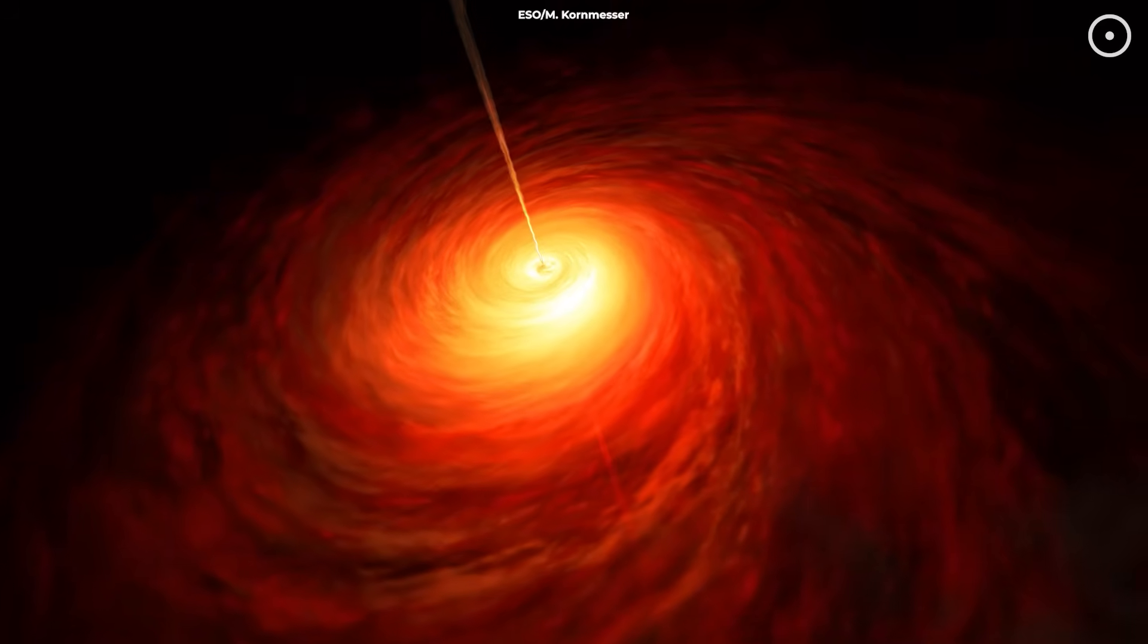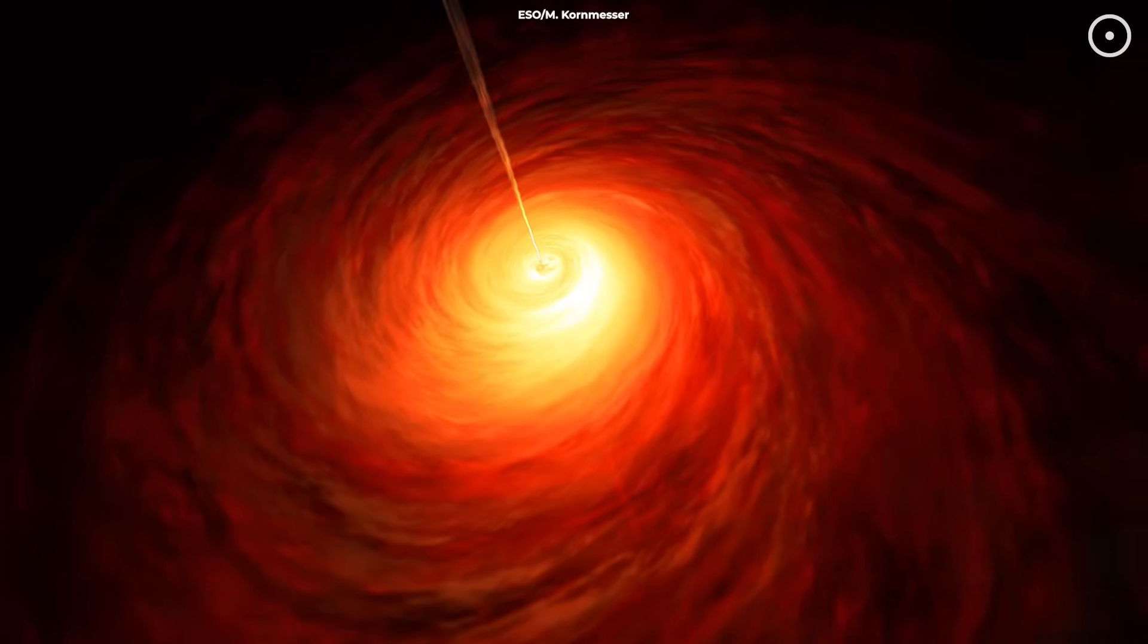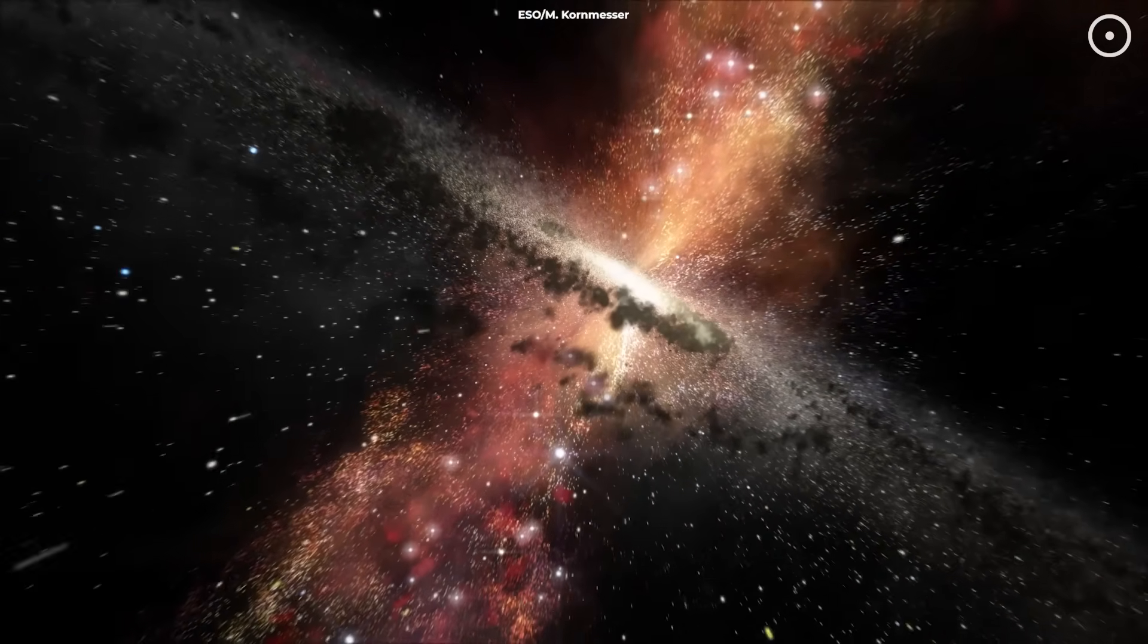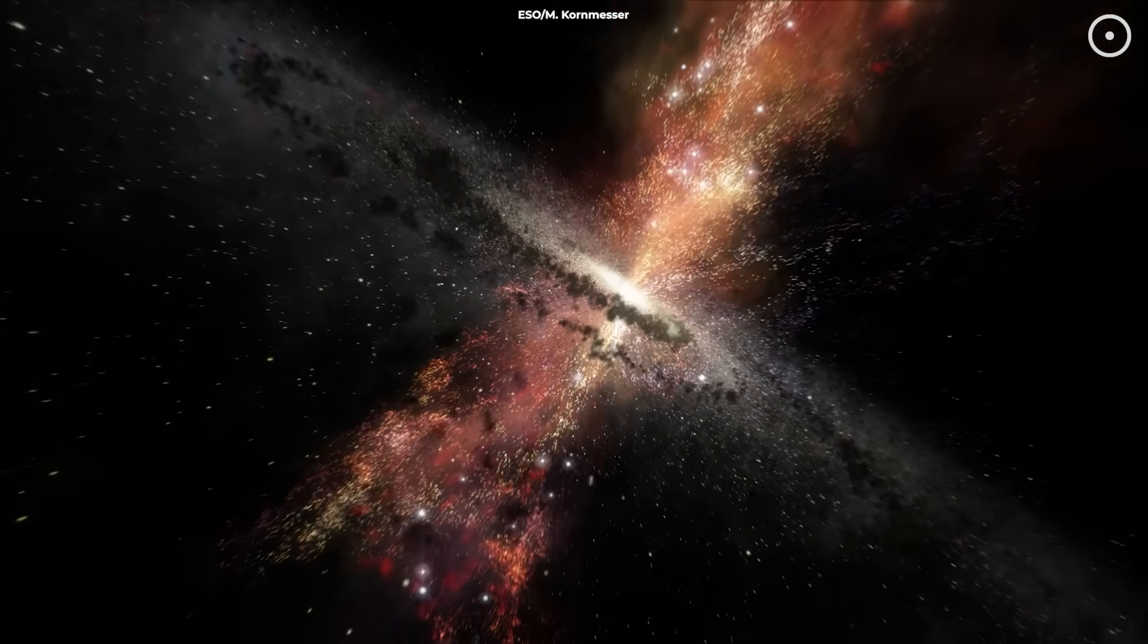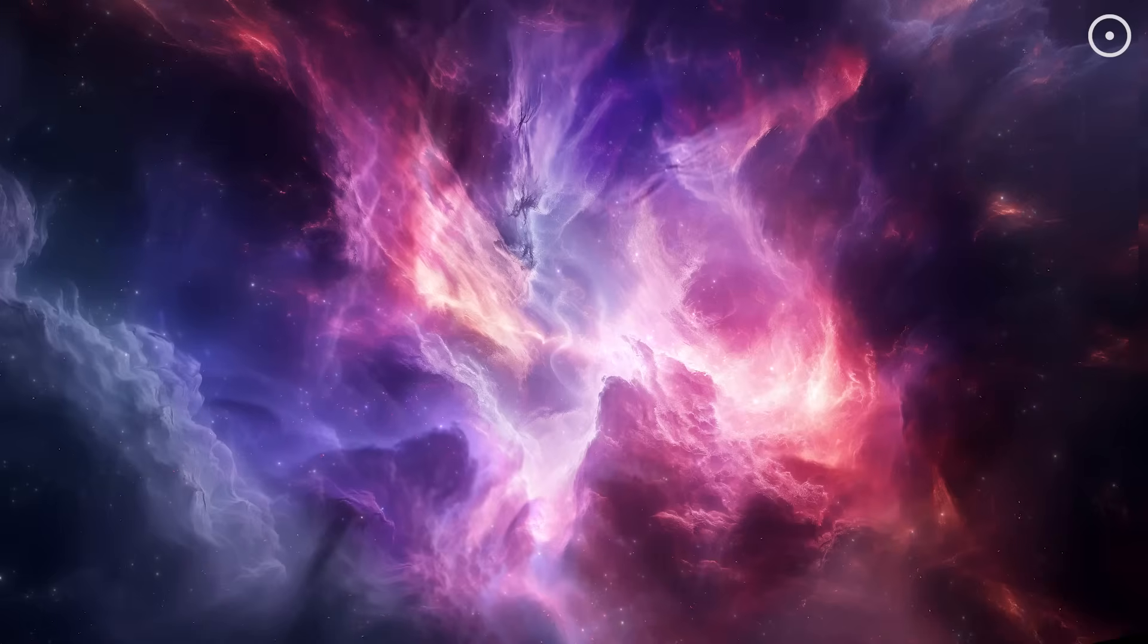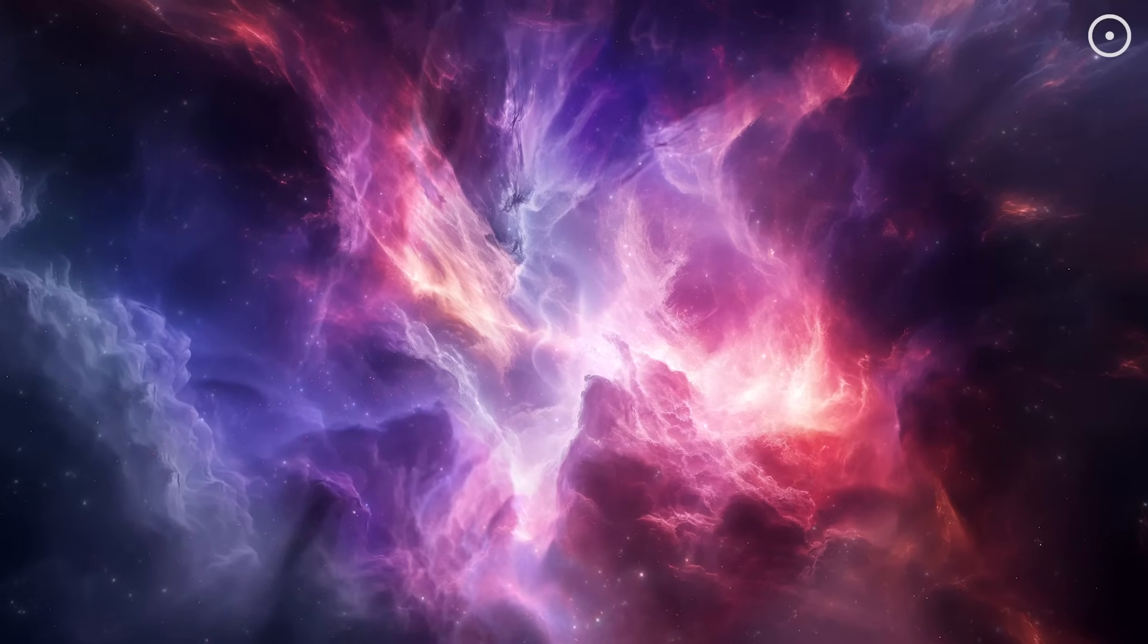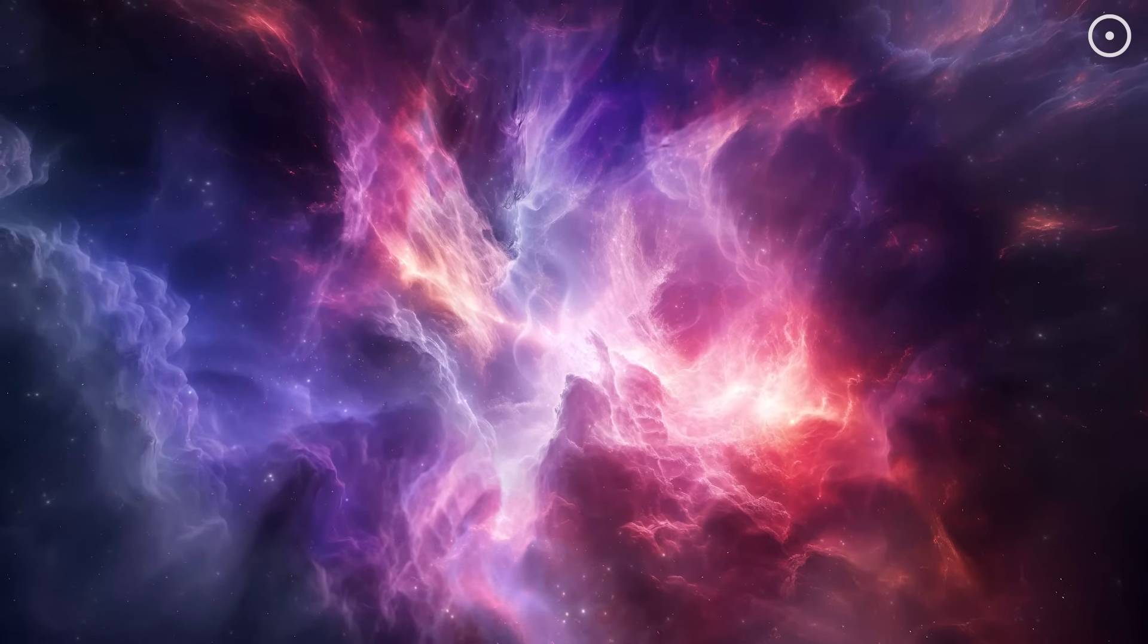When a supermassive black hole feeds on gas and dust, it can unleash powerful winds and radiation. These outbursts can blow away the raw materials needed for star formation, effectively shutting down the galaxy's ability to produce new stars. But it's not all destructive. In some cases, black holes can trigger star formation by compressing gas clouds as they eject energy, creating bursts of new stars in certain regions.